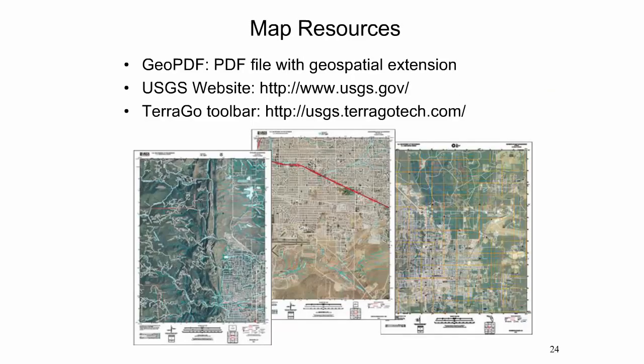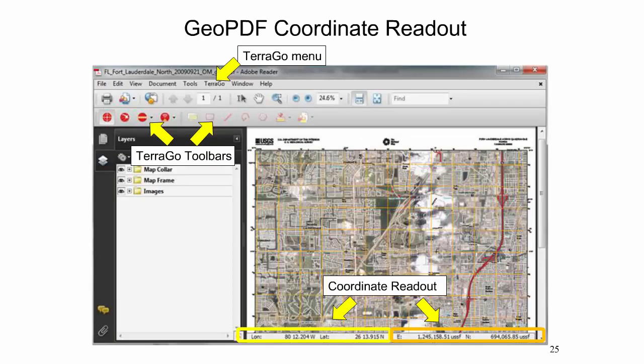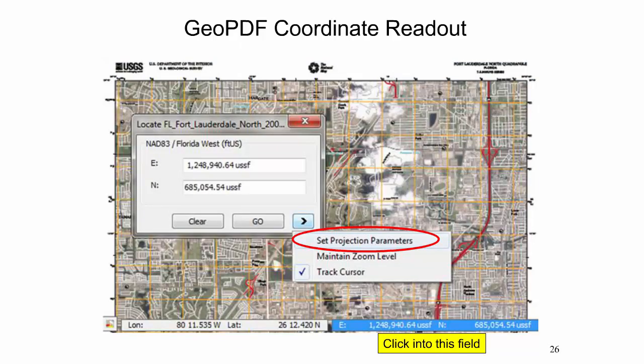US Topo maps are published as PDF files with a geospatial extension called GeoPDF. These GeoPDF files can be viewed in Adobe Acrobat Reader or Adobe Acrobat, and can be freely downloaded from the USGS store via the USGS website. For full coordinate readout functionality, the TerraGo toolbar is available as a free plugin for Adobe Acrobat. Once installed, extended geospatial functions can be accessed through the TerraGo menu or toolbars, and coordinates for a point are shown in two different coordinate systems simultaneously at the bottom of the map.